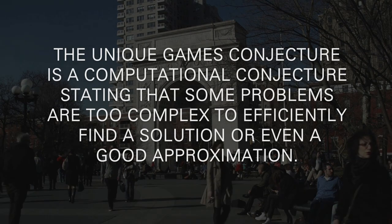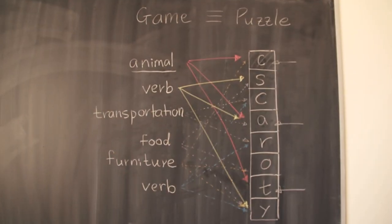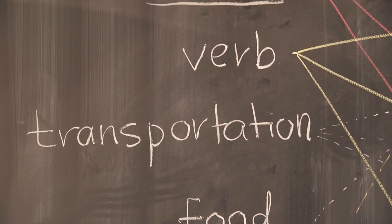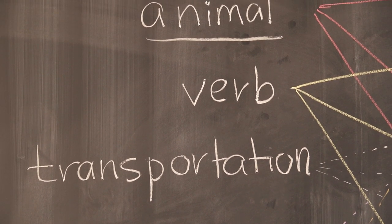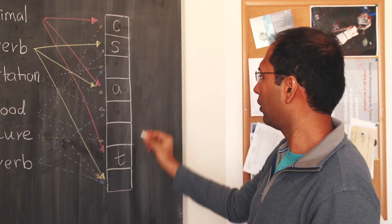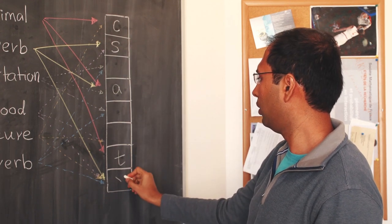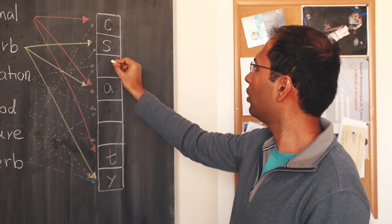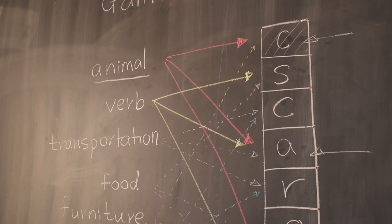I will describe the kind of games that I like to play by giving a toy example. So this is really a puzzle constructed by my collaborator Dana Moshkovis. On the left hand side, you have categories such as animals, verbs, transportations and so on. And on the right hand side, you have a column of boxes and you want to fill up these boxes with letters. So you have to pick up these words for different categories on the left hand side so that they are consistent with the letters that you put on the right hand side. So it's a puzzle.